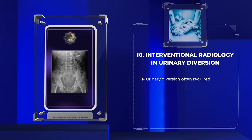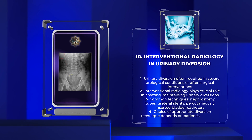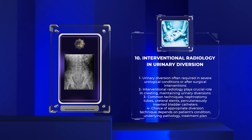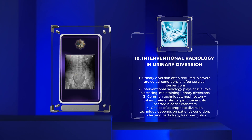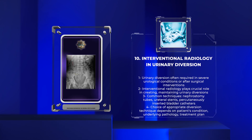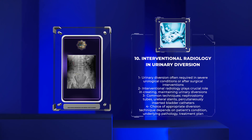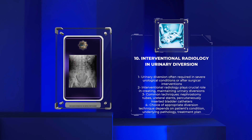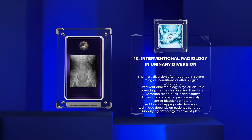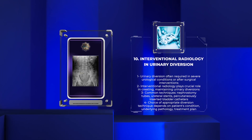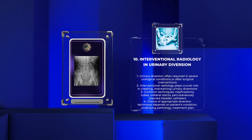Urinary diversion is often required in patients with severe urological conditions or after surgical interventions. Interventional radiology plays a crucial role in creating and maintaining urinary diversions. Common techniques involve the placement of nephrostomy tubes, ureteral stents, or percutaneously inserted bladder catheters. These interventions are performed to redirect urine flow, bypassing the original urinary tract. The choice of the appropriate diversion technique depends on the patient's condition, underlying pathology, and overall treatment plan.